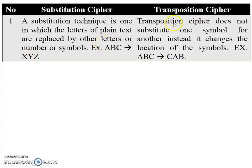Transposition cipher does not substitute one symbol for another. Instead, it changes the location — or we can say position — of the symbol. For example, ABC: now change the position of ABC to C, A, B. So this is the transposition cipher. In substitution cipher there is no position change.